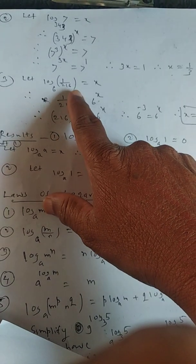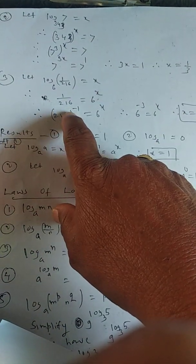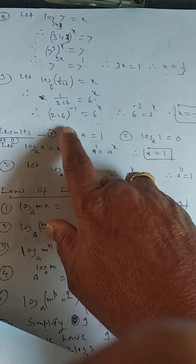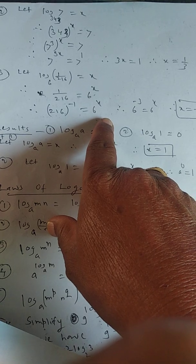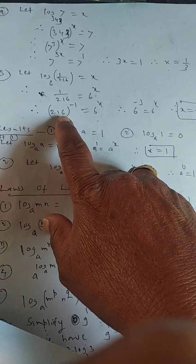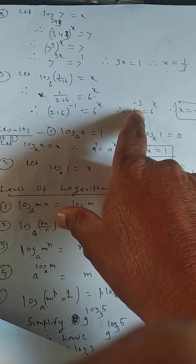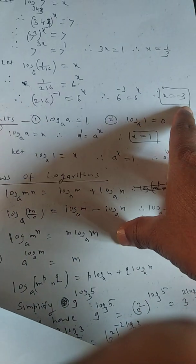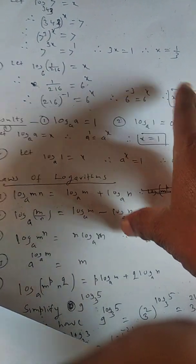Next is log of 1/216 to the base 6, equal to x. Therefore 1/216 = 6 raised to x. 216 raised to minus 1 = 6 raised to x. And 216 can be written as 6 cubed, so 6 cubed raised to minus 1 means 6 raised to minus 3 = 6 raised to x. Therefore the answer is minus 3.